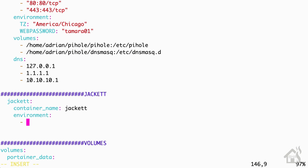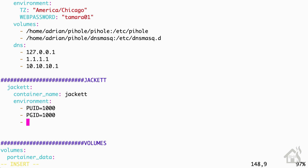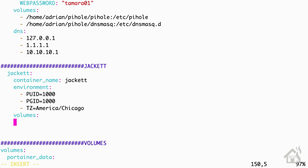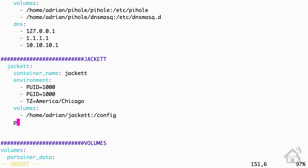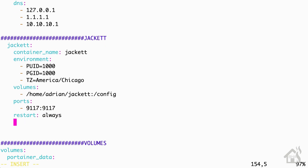I have three variables to add for the environment. The first one is PUID which is 1000, PGID which is also 1000, and then for the time zone TZ equals whatever your time zone is — mine is America/Chicago. For volumes, this is the directory we just created for our Jacket config, so mine is /home/adrian/jacket:/config. For ports it's 9117:9117, which is the default port for Jacket. We'll set the restart to always, and for the image it is linuxserver/jacket.